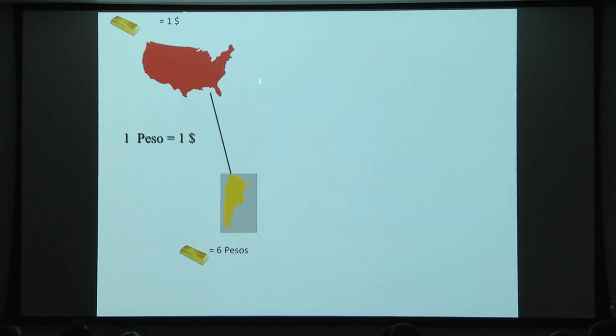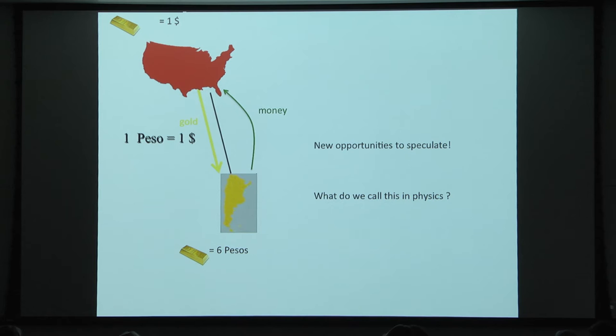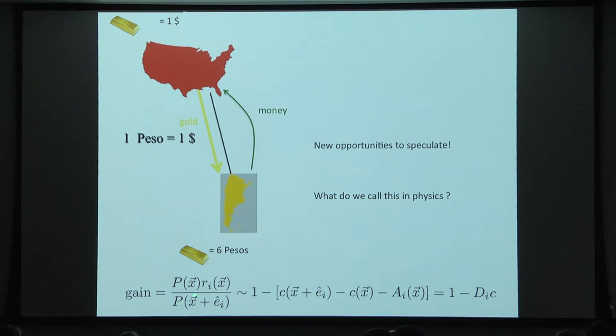Going back to this situation, there are now new opportunities to speculate. You would start with six pesos, exchange them for six dollars, buy gold, come to another country, sell the gold, and get more pesos. If you start with one peso, you get one bar of gold and sell it for six pesos — you earn a factor of six. What do we call these opportunities to speculate in physics? The gain of this circuit is related to the covariant derivative of the field C.